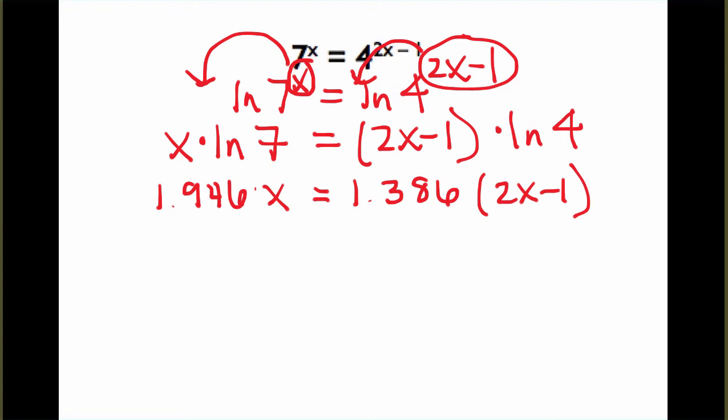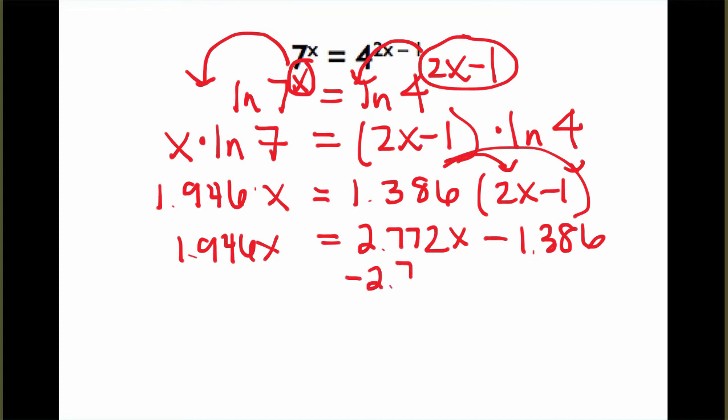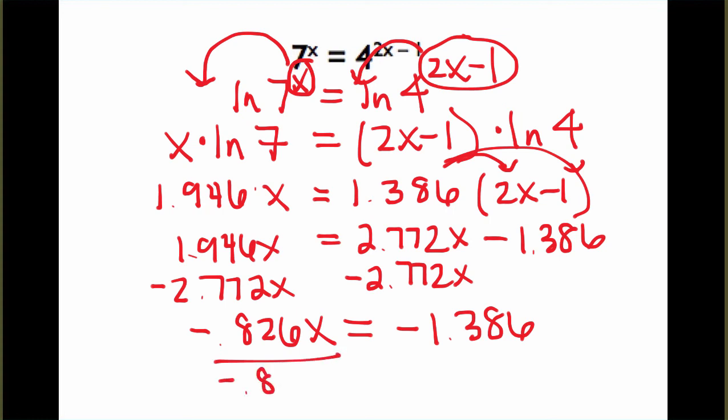So, this now is just a standard linear equation to solve. We can distribute the 1.386 on the right and then we'll be able to solve for x. So, what I would do next to solve here is just subtract to move all of the x's to one side of the equation, and I end up with negative 0.826x equals negative 1.386 and so the final step will be to divide.